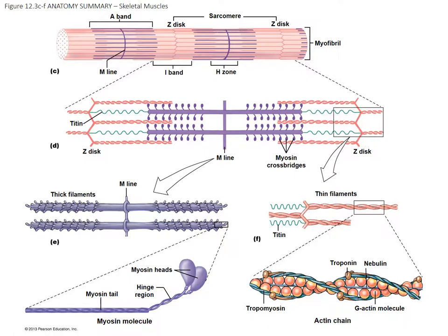Nebulin is an anchor that aligns the different actin molecules along the chain to make sure they don't move. Tropomyosin coils around the actin and blocks it from binding to the myosin heads. Troponin dots the tropomyosin and acts as a binding site for calcium; once bound to calcium, it moves the tropomyosin to allow contraction to take place.